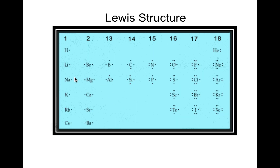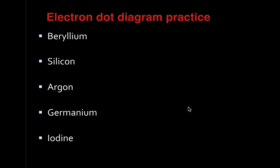Group 1 elements have just one dot around them. Group 2 has two dots. Group 13 has three dots. Group 14 has four dots — one on each side. Once you have one dot on each of the four sides, you start adding another dot to one side for group 15, two sides for group 16, three sides for group 17, or all four sides have two dots for group 18 — and that's a stable electron configuration.